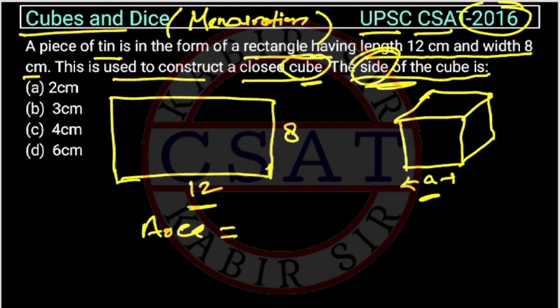So, what will be the perimeter of cube? First of all, if you do not know the perimeter, the perimeter of the cube will be 6a square, because this will be a square. Total, there are 6 faces. So, the total perimeter will become 6a square.